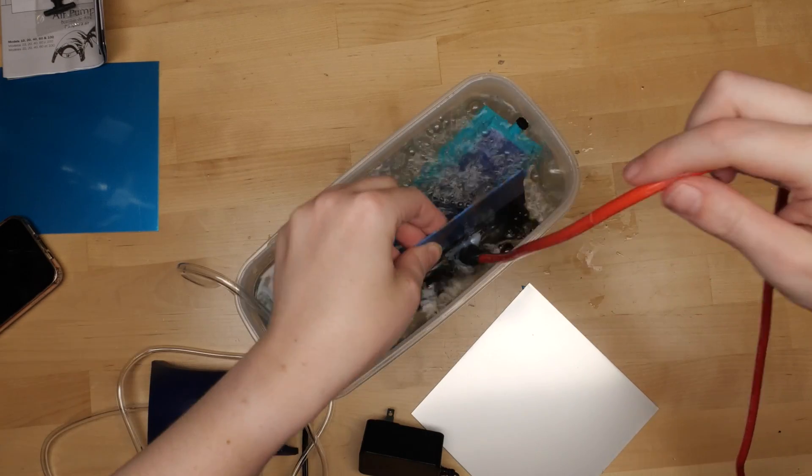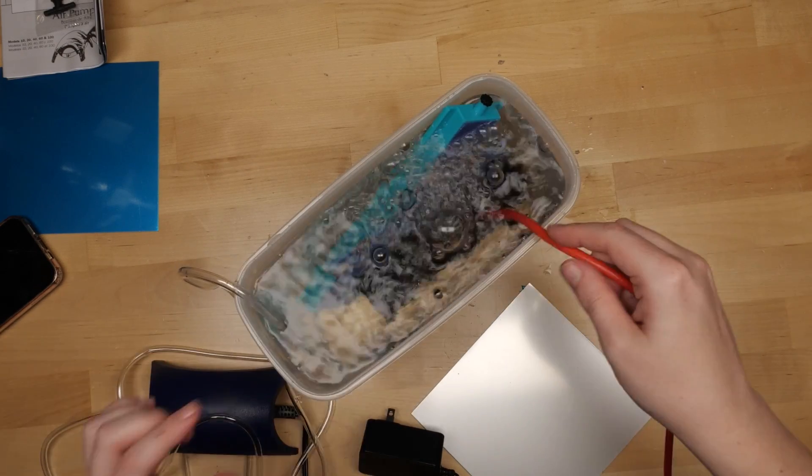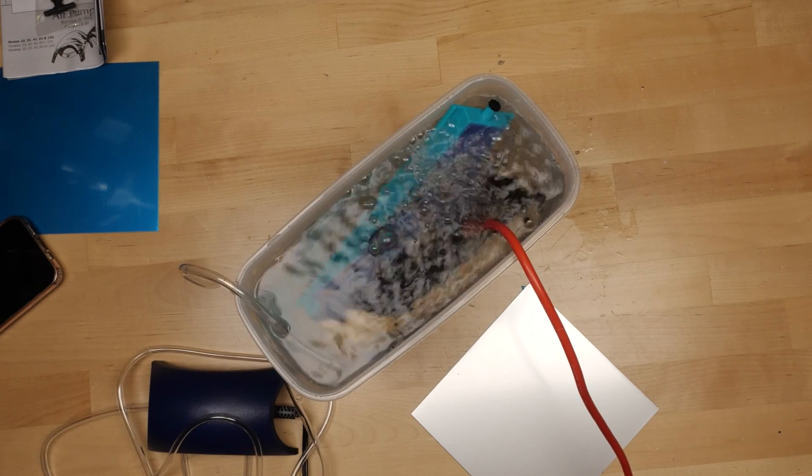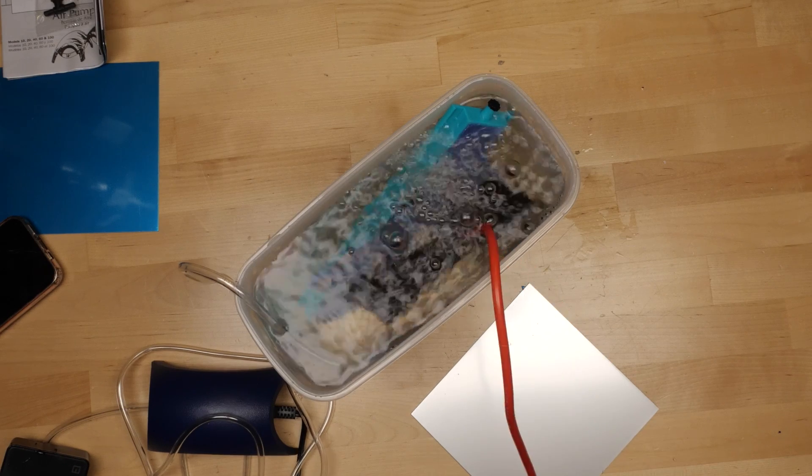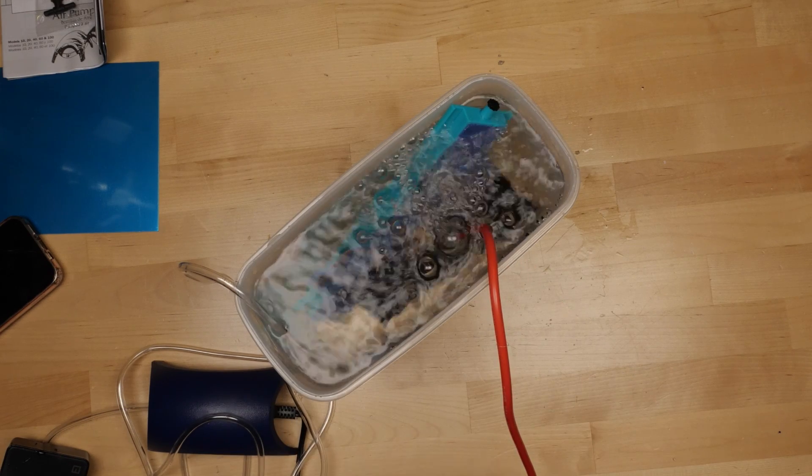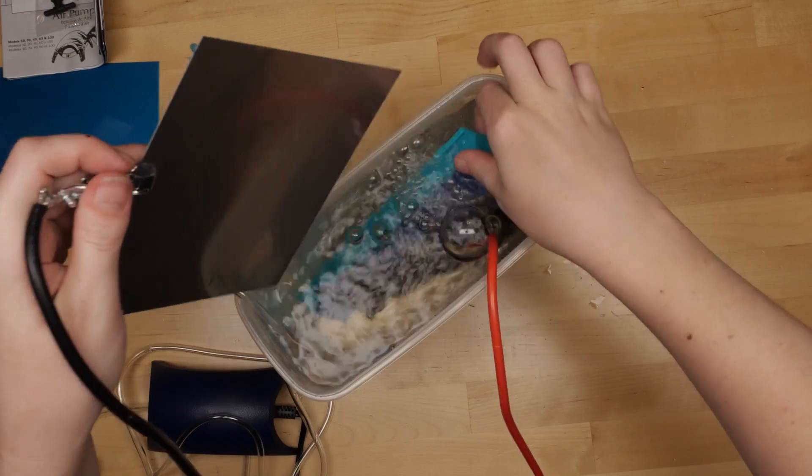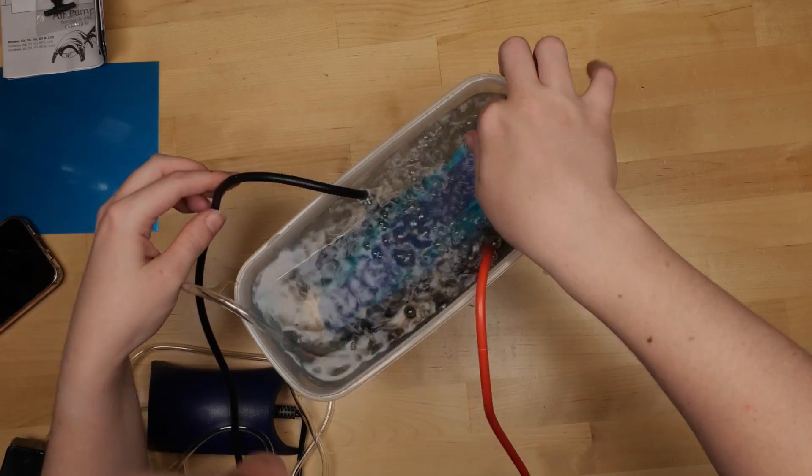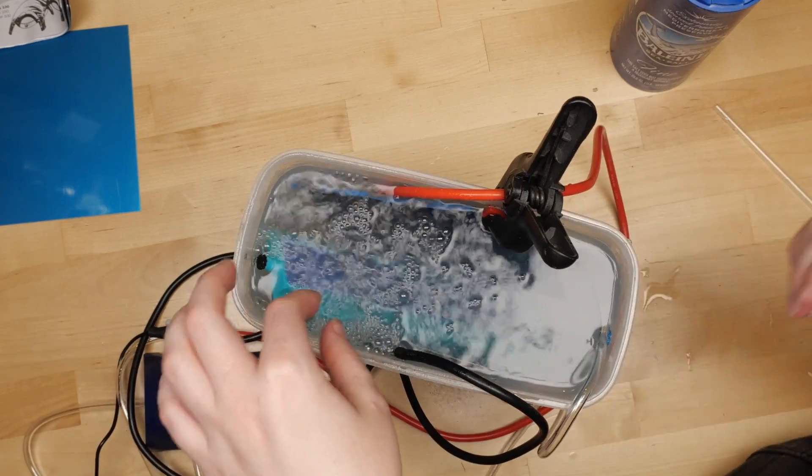I put my brass with the positive wire attached to it in on one side of the container. I clipped the negative wire to a piece of stainless steel about the same size as my brass, then slid it in the other side of the container. I used a clamp to secure the metal to the container, mostly so that you can see better.